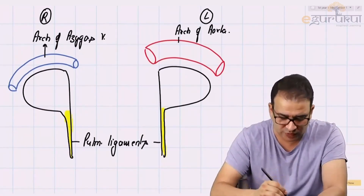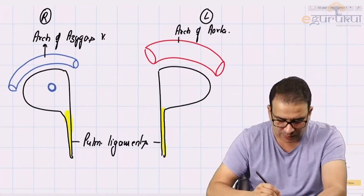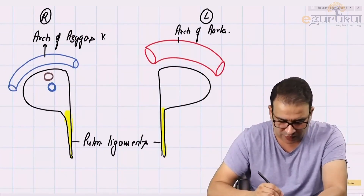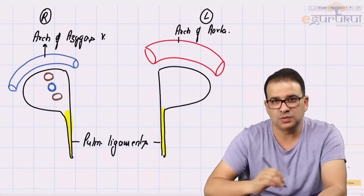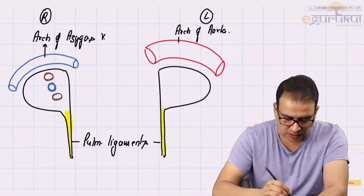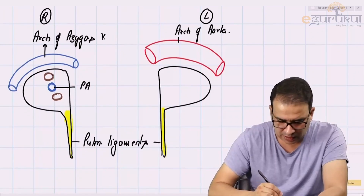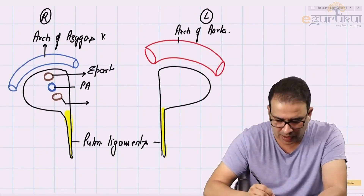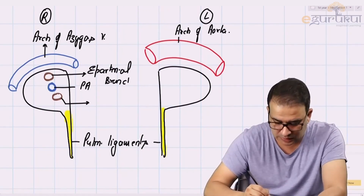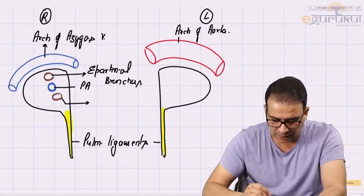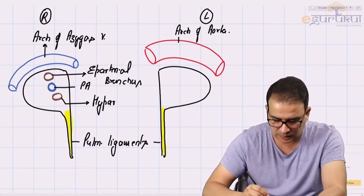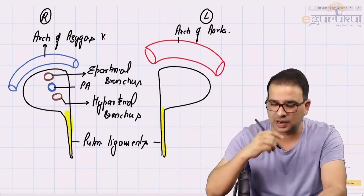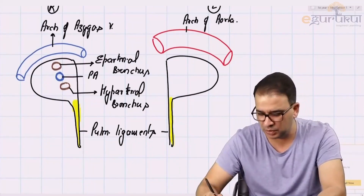When you look at the right root of the lung, you see the pulmonary artery — drawn here in blue. Above and below the pulmonary artery, we have the bronchi. The bronchus above the pulmonary artery is called the eparterial bronchus — 'epar' meaning above the artery. It is bronchus, not bronchial. Below the pulmonary artery is the hyparterial bronchus. So: eparterial above the pulmonary artery, hyparterial below.